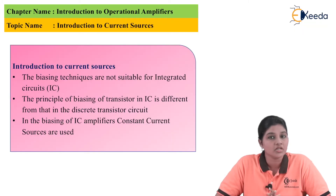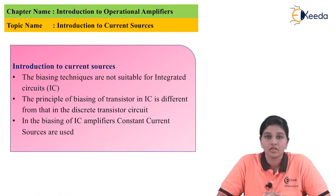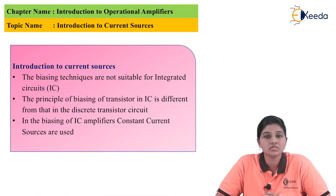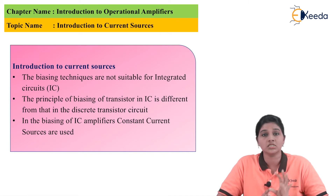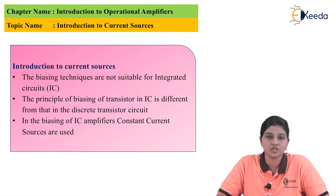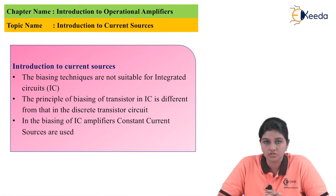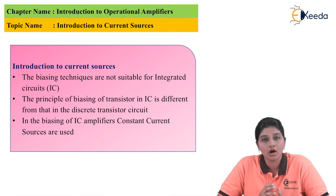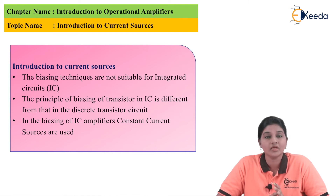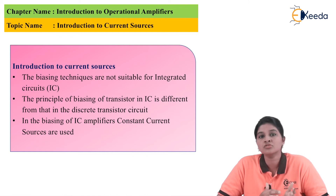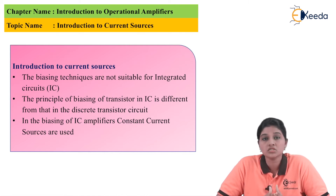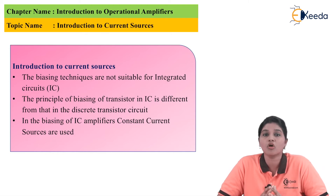Now, there are various biasing circuits that we know — the various biasing circuits are voltage divider bias, base bias, and self bias. These biasing circuits are basically used for biasing of BJT and FET and the circuits are required to be discrete ones. But when we talk about the integrated circuit, we cannot use these biasing circuits because the integrated circuit requires fabrication on the chip.